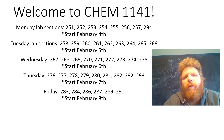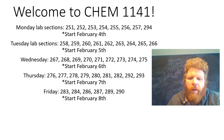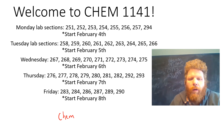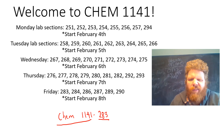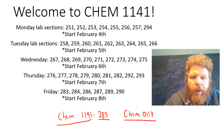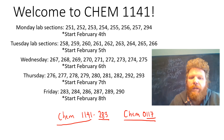Some of you might be wondering: how do I figure out which section number I am? Go to Cat's Web, look at your schedule, and what you will see is something listed that looks like CHEM 1141-283 — this is your course and this is the section number. After that you'll see something like CHEM 0117, which is the room number you're trying to get into, so you need to find the chemistry building, room 117.